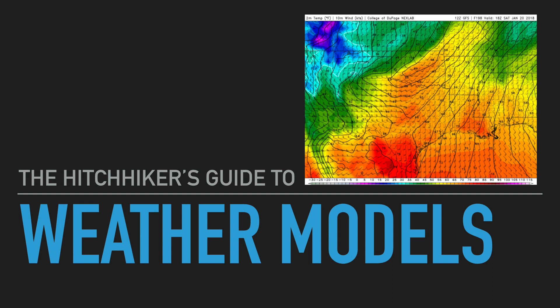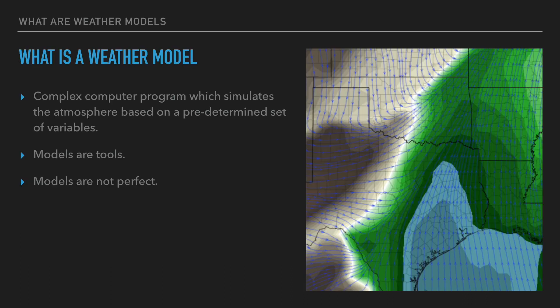None of this is commands — it's all suggestion. Let's get into the meat of this discussion. The very first thing we want to talk about is: what is a weather model? Weather models are simply complex computer programs which simulate the atmosphere. There are predetermined variables which do this. Models are tools and they are not perfect. Simple as that. That's the basic theoretical approach to models.